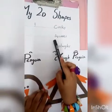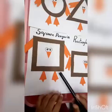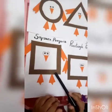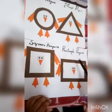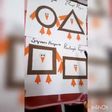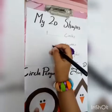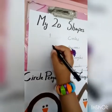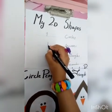Let's count squares. This is one square. No more squares there. Now we have one square here.